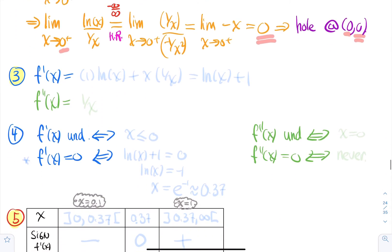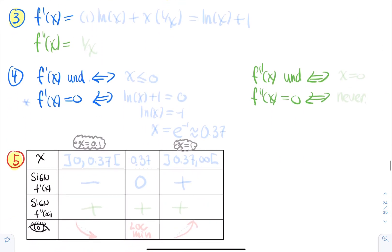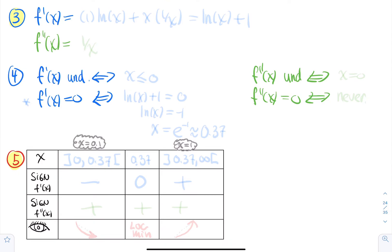For f', it's a product rule: the derivative of x is 1 times ln(x), plus x times the derivative of ln(x) which is 1/x. This simplifies to ln(x) + 1. Differentiating again: the derivative of ln(x) is 1/x and the derivative of 1 is zero. So f'' = 1/x.